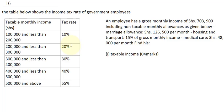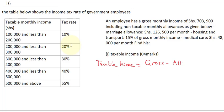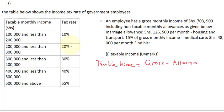Medical care is 48,000. We need to find his taxable income. The first thing to know about calculating taxable income is the formula: taxable income equals gross minus allowance. We were given the gross as 703,900.